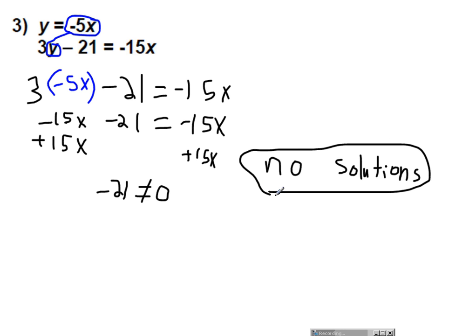If you graph this, it would mean that the lines never intersect. They never share a common solution.